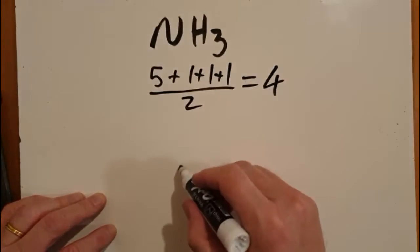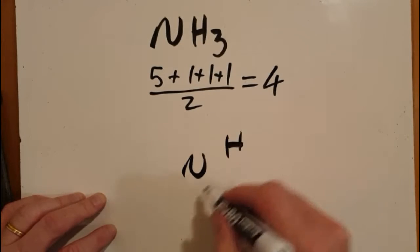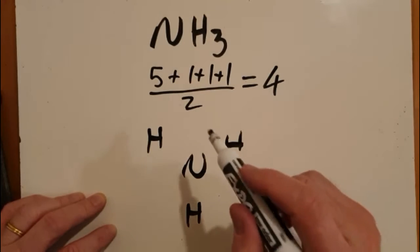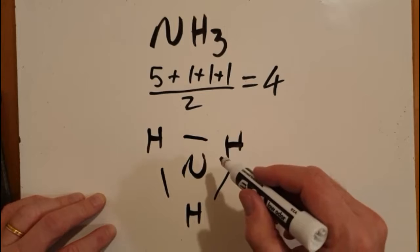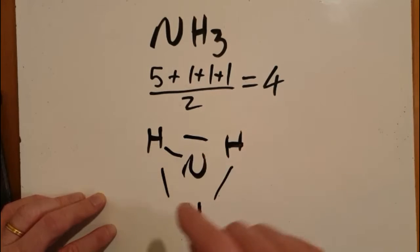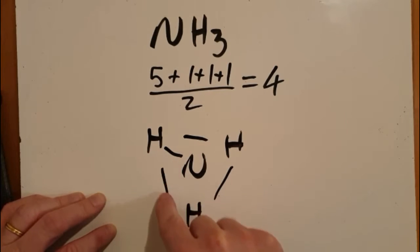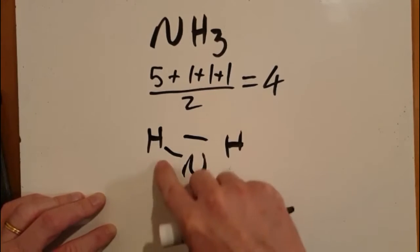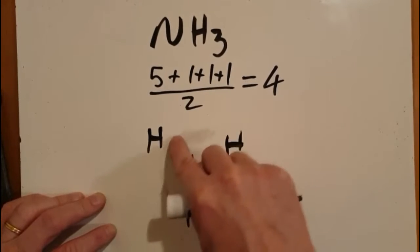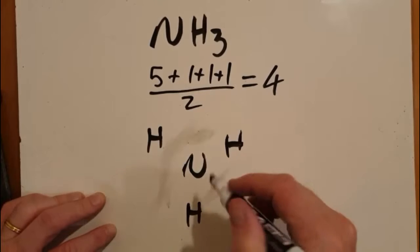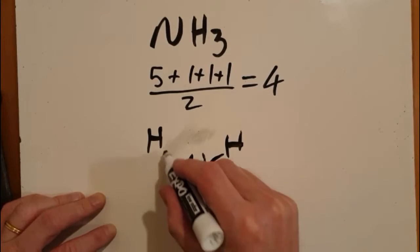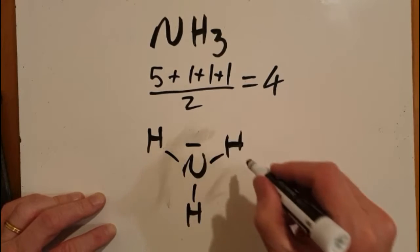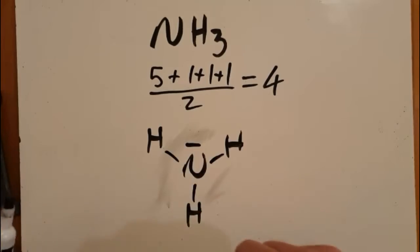Nitrogen is first in the formula so almost certainly it goes in the middle, with the others spaced around it. I need to make one molecule — hydrogen can only have one bond, it can only have one pair of electrons. So let me make sure those hydrogens just have one bond each: one, two, three, and I've got one more pair of electrons to go. I've accounted for three, so it goes up here. That's the Lewis structure for ammonia.